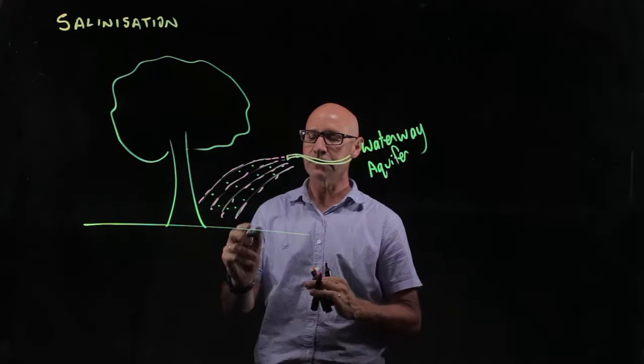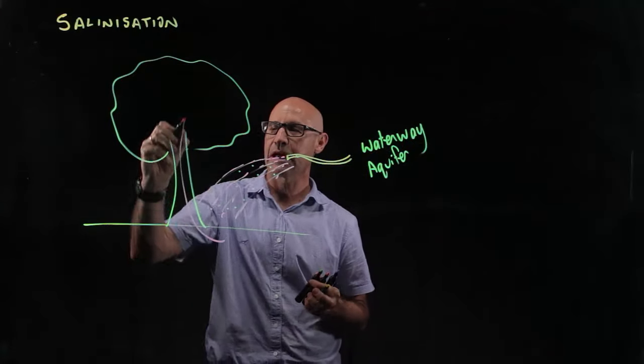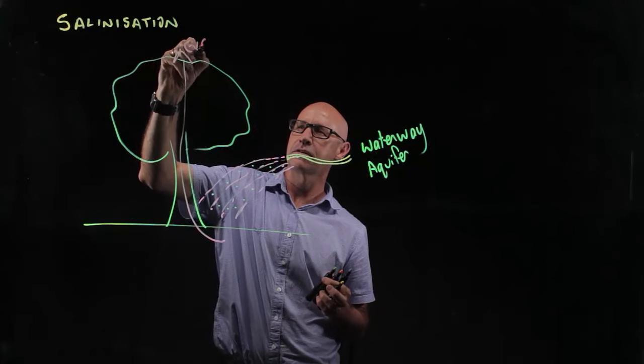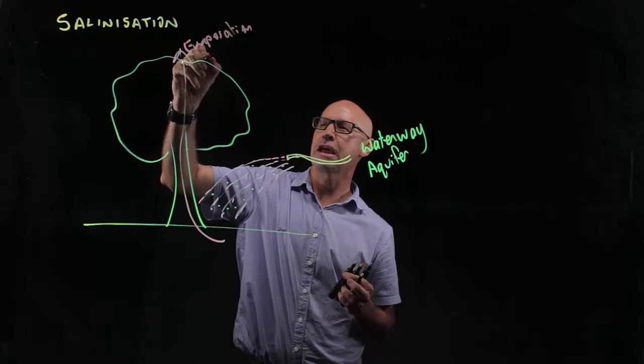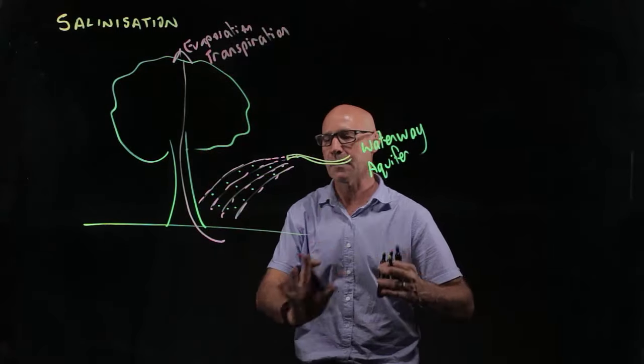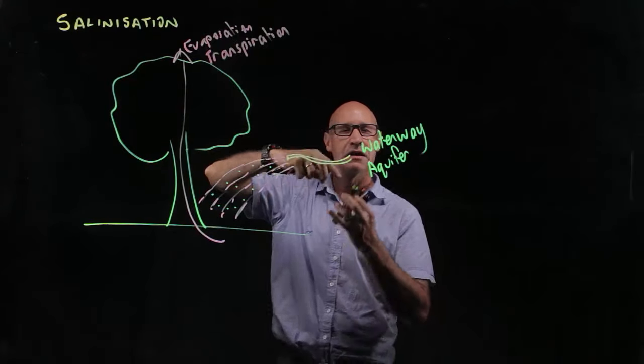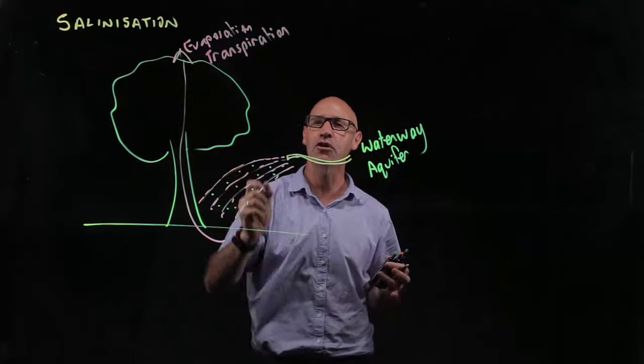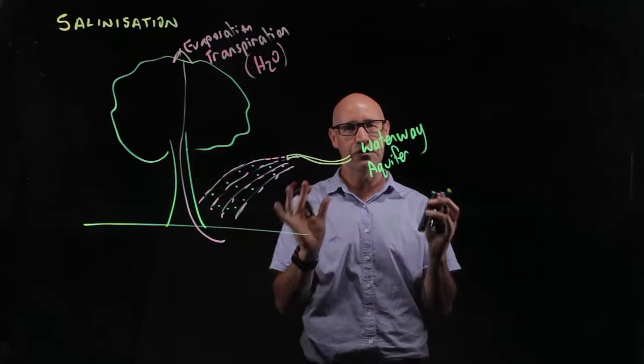That water goes onto the land and some of it gets taken up by the plants and eventually evaporates through a process we call transpiration. Some of the water passes up through the plants and evaporates through transpiration. But importantly, it's only the water that does that, not the salt.